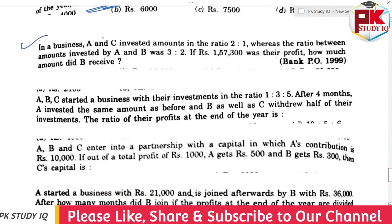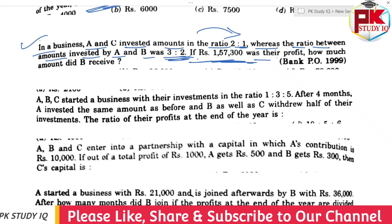We will show all the questions and answers in the answer session. Business: A and C invested amounts in a ratio of 2:1, whereas the ratio between amounts invested by A and B is 3:2. If the profit was Rs. 1,57,300, how much amount did B receive?